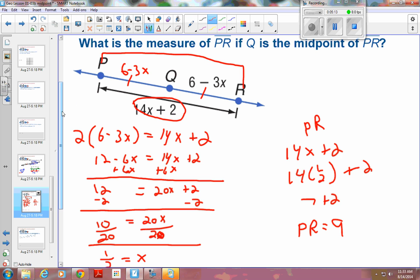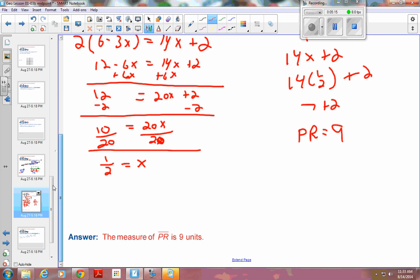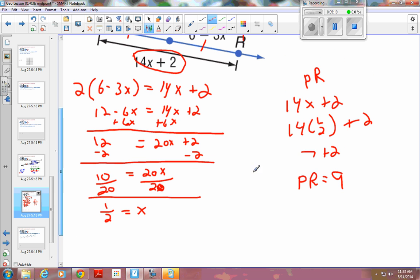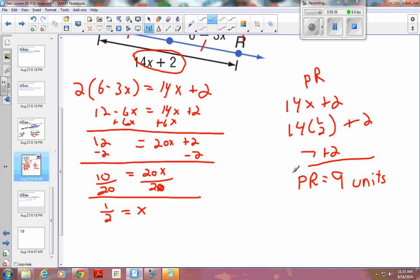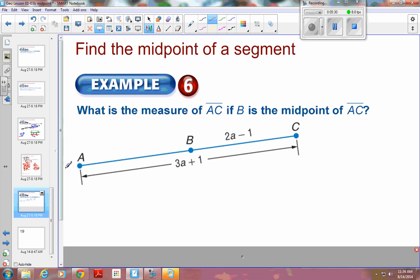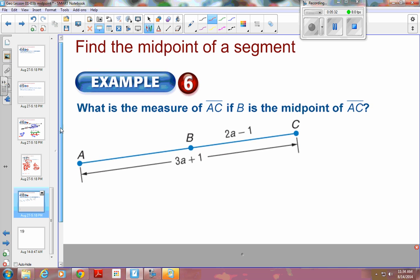And again, we've got no units on it, so that's the best we can do. The book says measure of segment PR is equal to 9 units. I guess you could put the word units on here. And there's our final answer. One more of those. If you've got it already, you're good, you can turn this off. Otherwise, you want to watch one more time.